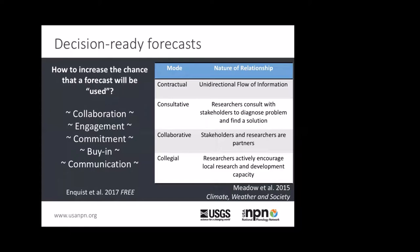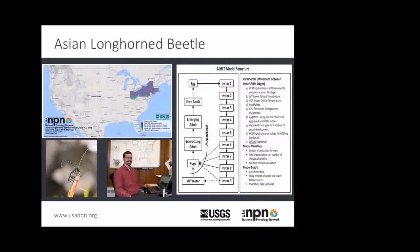Here at the NPN, we think about different modes of stakeholder engagement. There's the contractual mode, where we have a unidirectional flow of information and make a product for a problem without much stakeholder interaction. We consult with stakeholders to diagnose problems and find solutions. There's the collaborative mode, where stakeholders are equal partners at the table. And the collegial mode, where researchers are actively encouraged to take on their own development and capacity building.